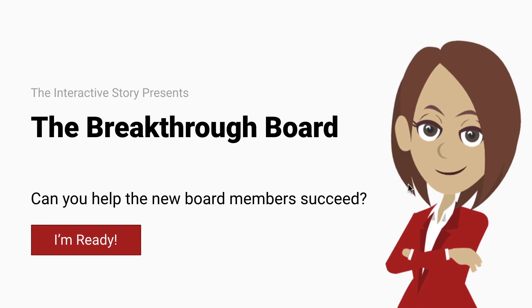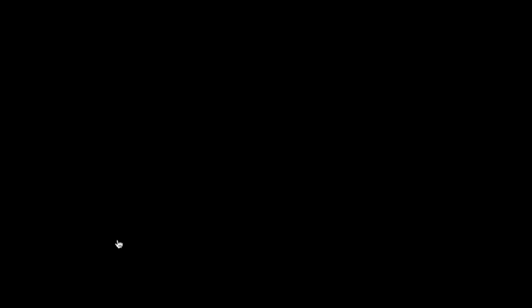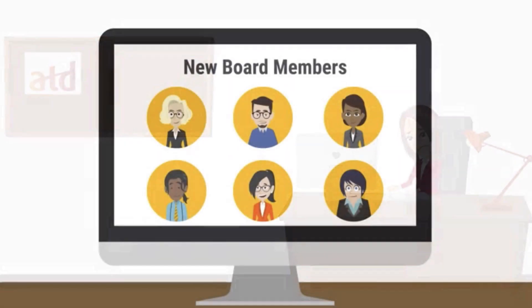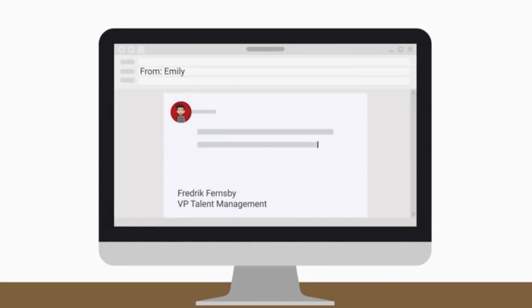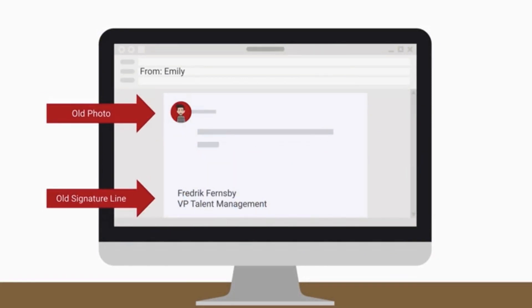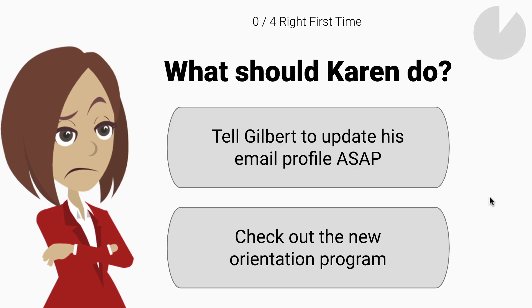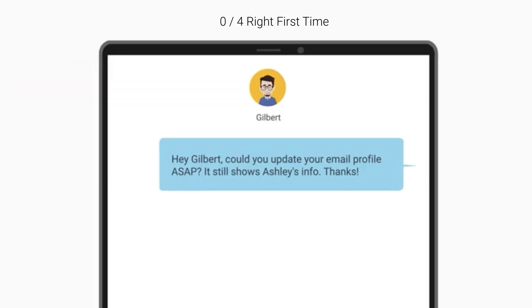A second format to consider is animated interactive videos. This format is good to use when live video footage isn't available. Animation software like Vyond, formerly known as GoAnimate, makes it easy to customize characters, backgrounds, and props. When I created Breakthrough Board for the Association of Talent Development, I used Vyond to create the animated video, and then used Storyline to add interactivity.